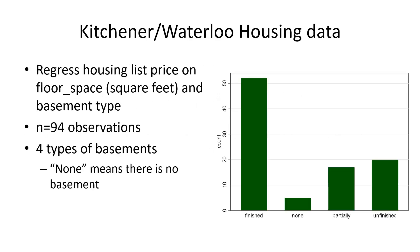The example data here is housing data for Kitchener-Waterloo. We regress housing list price on floor space as a measure of house size and basement type. Basement type has four different levels: finished, none, partially, unfinished. Which one am I leaving out here? Probably finished. So 94 observations.